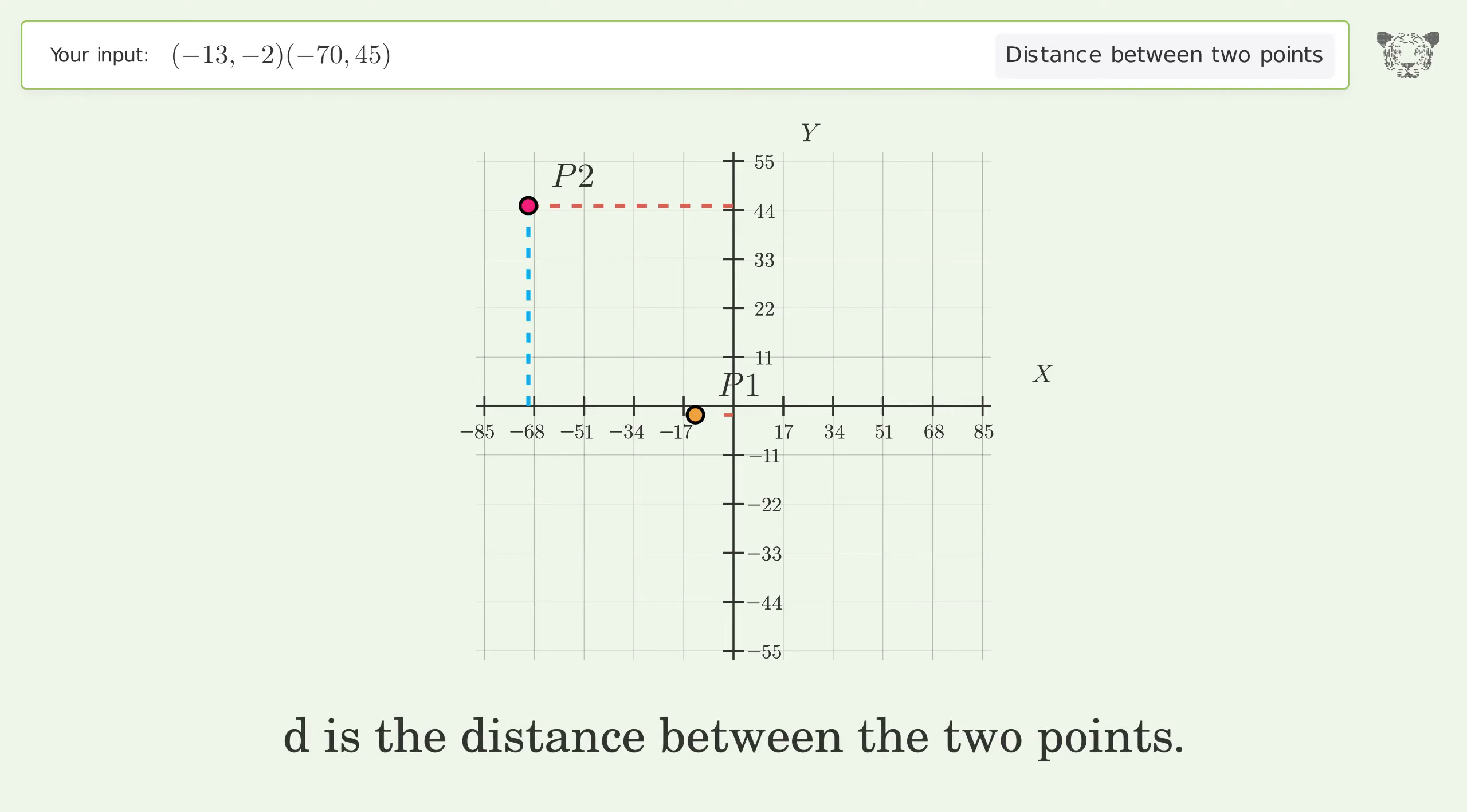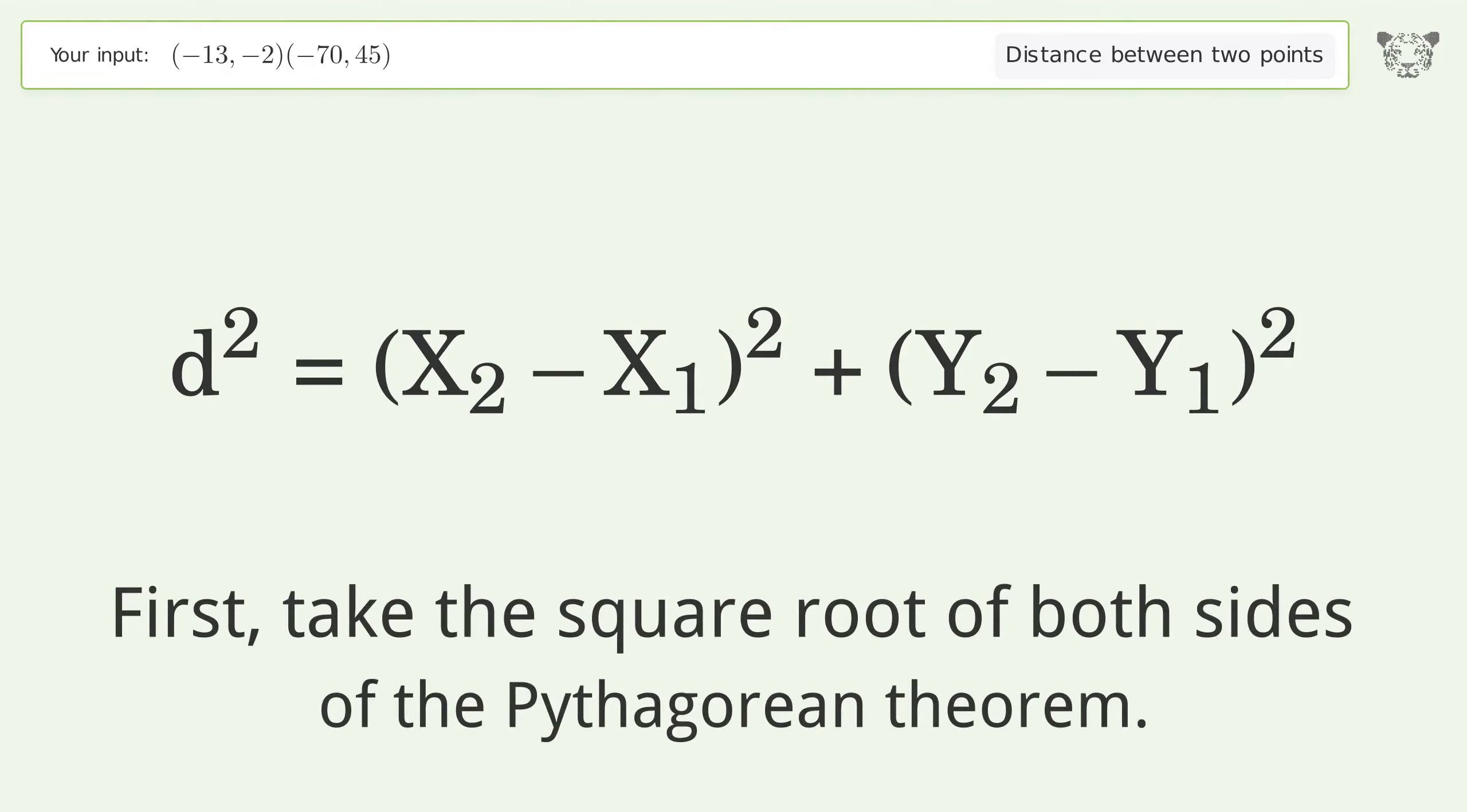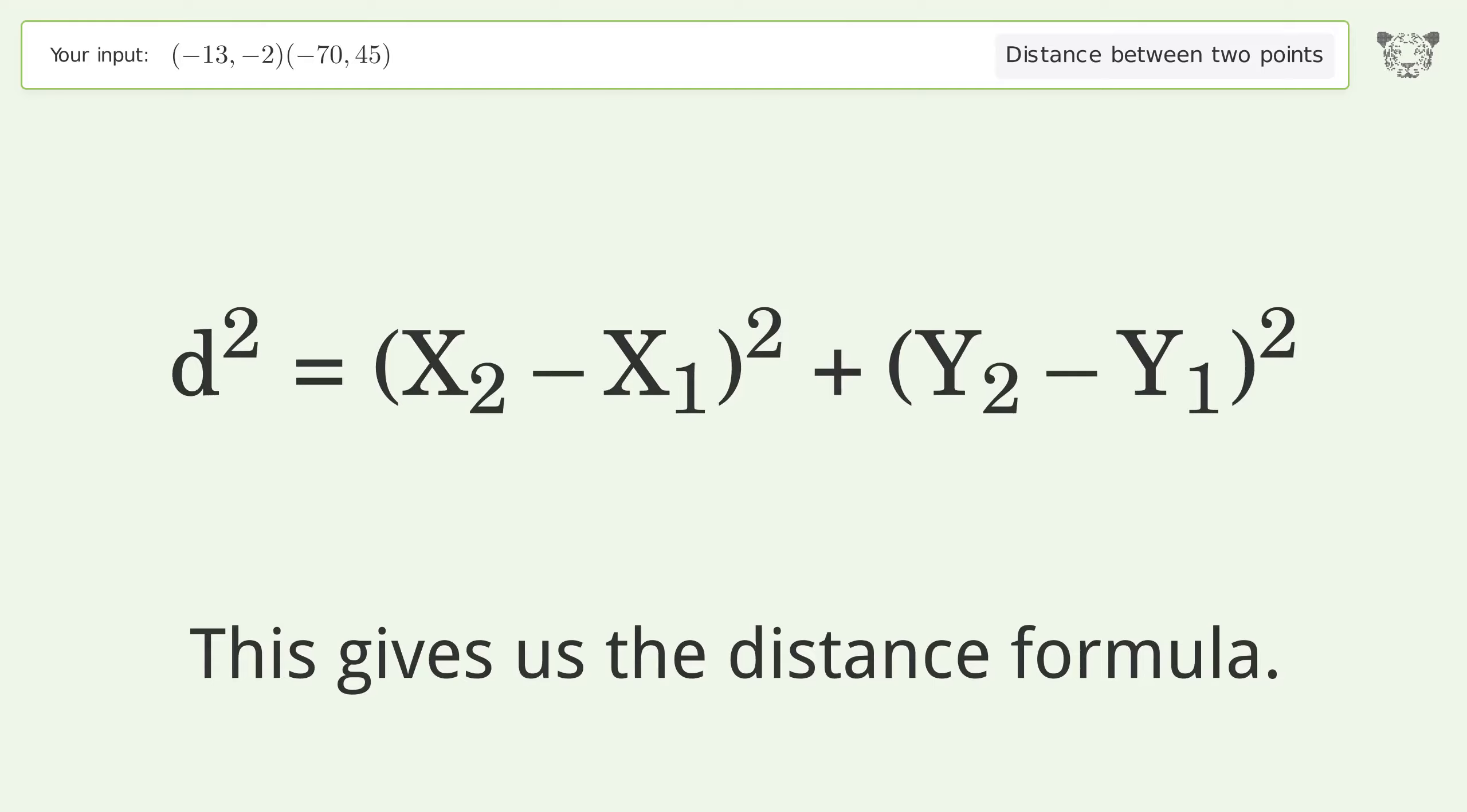d is the distance between the two points. First, take the square root of both sides of the Pythagorean theorem. This gives us the distance formula.